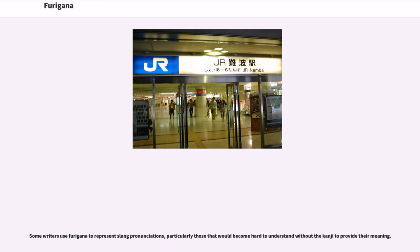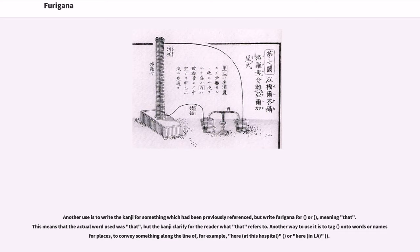Some writers use furigana to represent slang pronunciations, particularly those that would become hard to understand without the kanji to provide their meaning. Another use is to write the kanji for something which had been previously referenced, but write furigana for 'that' meaning 'that thing.' This means the actual word used was 'that,' but the kanji clarify for the reader what 'that' refers to. Another way to use it is to tag onto words or names for places to convey something along the lines of, for example, 'here, at this hospital' or 'here, in LA.'